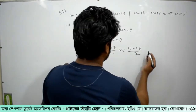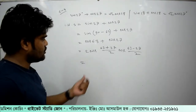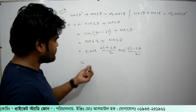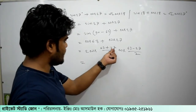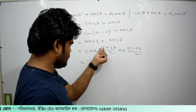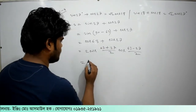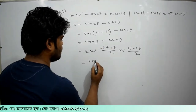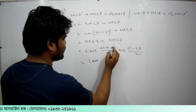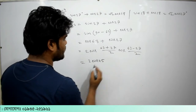Now, the calculation says 1 minus 2 cos — we lower the value in the math.